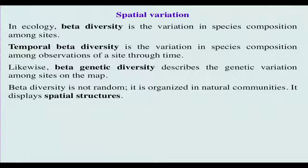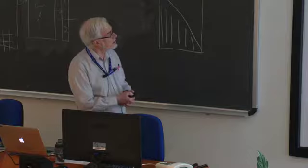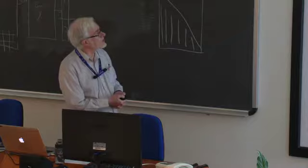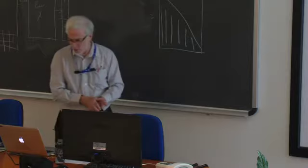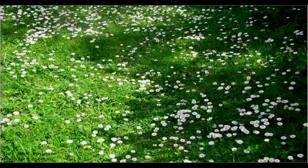We talk about beta diversity in general as the variation in species composition among sites. We can look along a temporal gradient — temporal series of sampling the same site — and talk about temporal beta diversity. In genetics, we can talk about genetic beta diversity. This term is becoming important to represent the sort of diversity through space or through time. Now we will look at the kind of organization that communities can have through space.